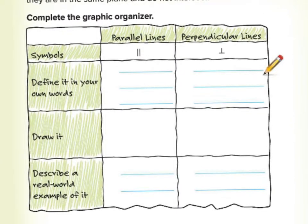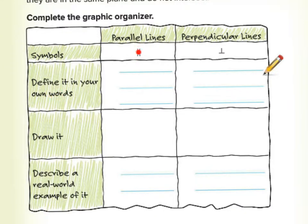Here we have parallel lines. They look like this — they go side by side, they never touch. That's what we call parallel lines. In your own words, I would say lines that never cross or never touch.